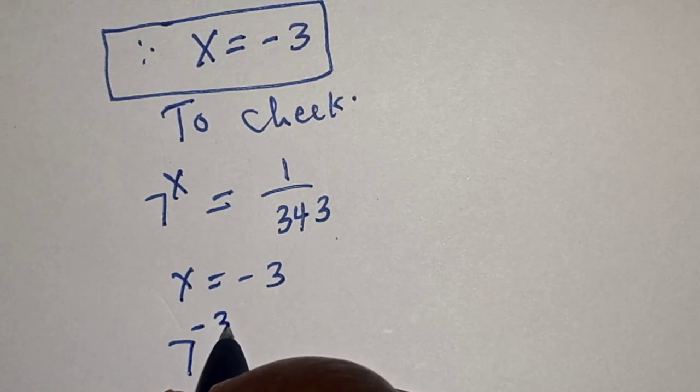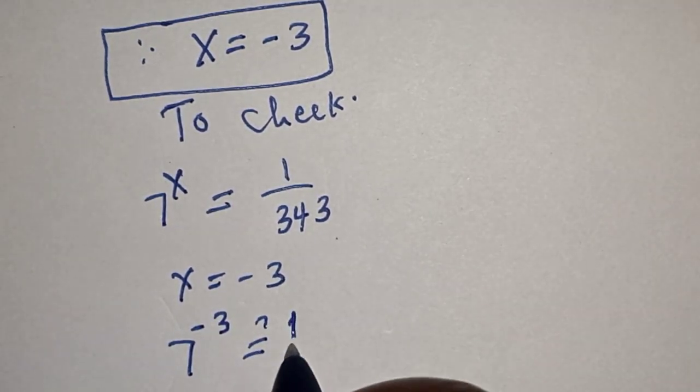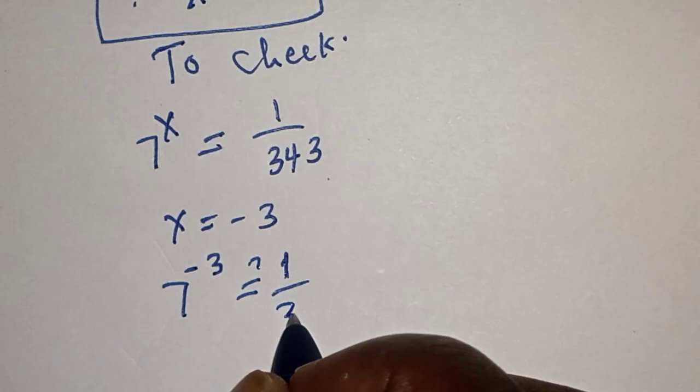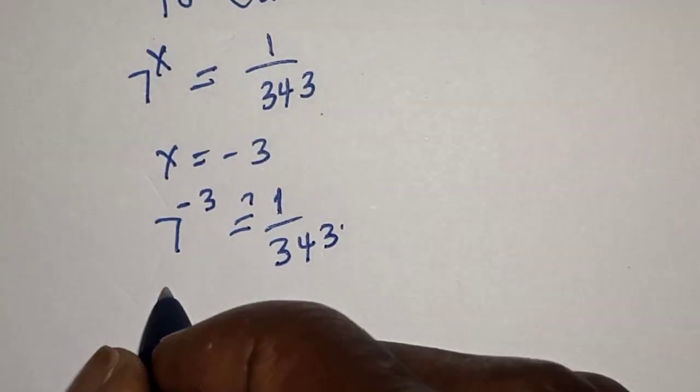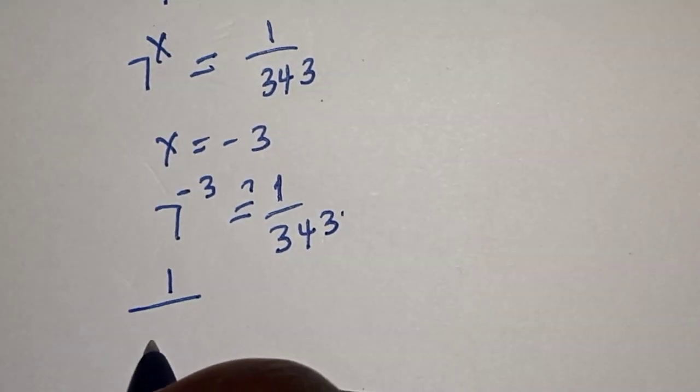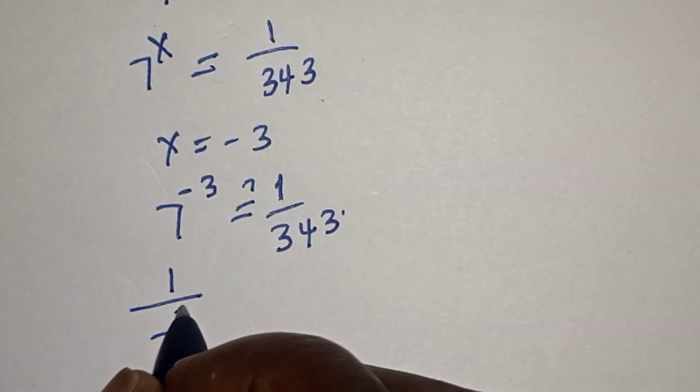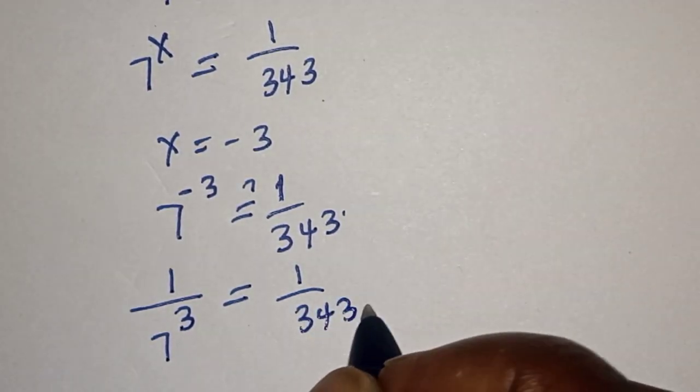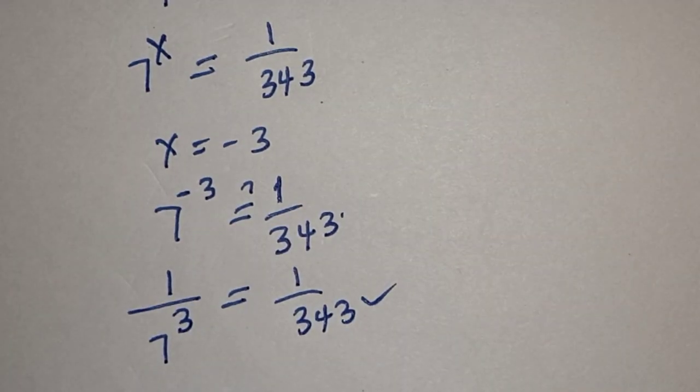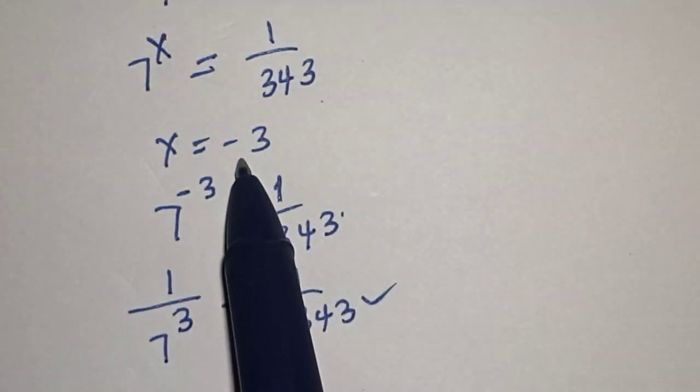This is 7 raised to power minus 3, which must be equal to 1 over 343. So this is 1 over 7 raised to power 3, which is equal to 1 over 343, which satisfies the given equation at x is equal to minus 3.